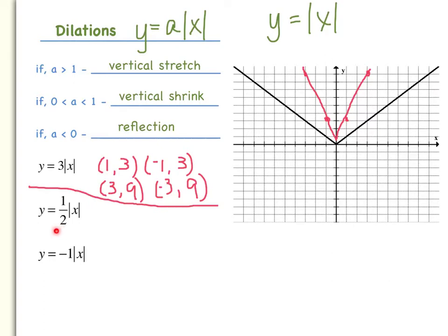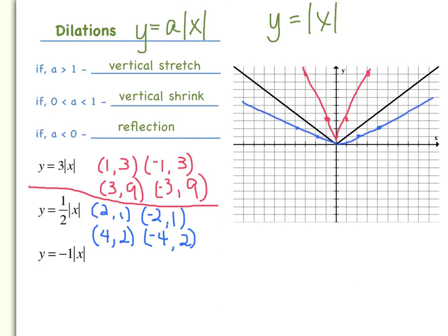Now let's look at an example when your a value is greater than 0 but less than 1, as in y equals one-half times the absolute value of x. If x is 2, the absolute value of 2 is 2, and one-half of 2 is 1. The absolute value of negative 2 is 2, and 2 times one-half is 1. I did the same for x equals 4 and negative 4. When plotted, the graph is flatter — it's been shrunken. When a is between 0 and 1, it flattens or shrinks your graph.